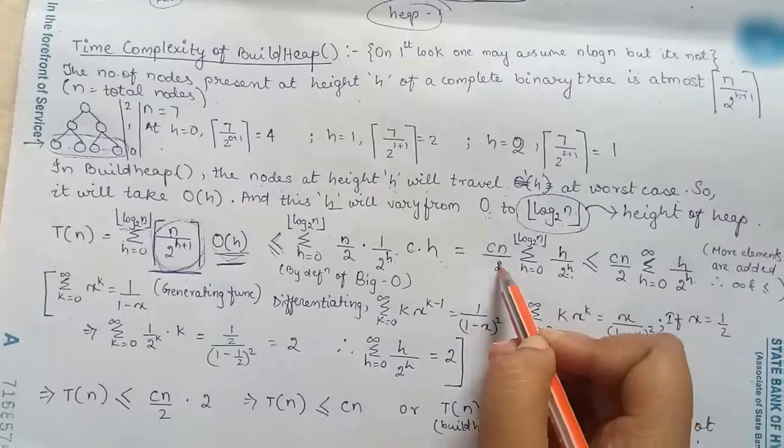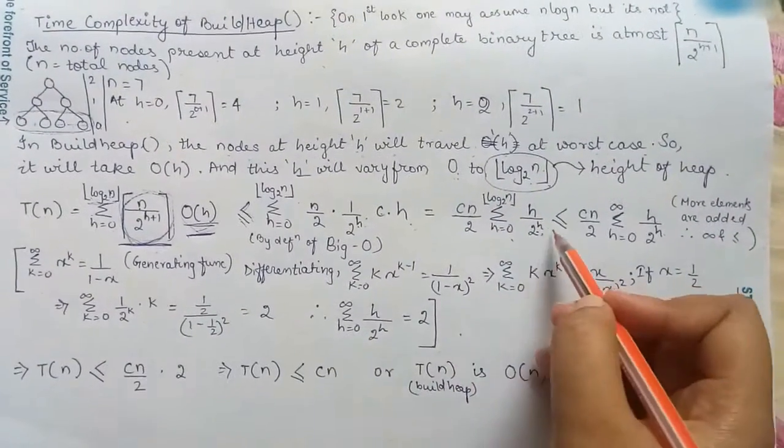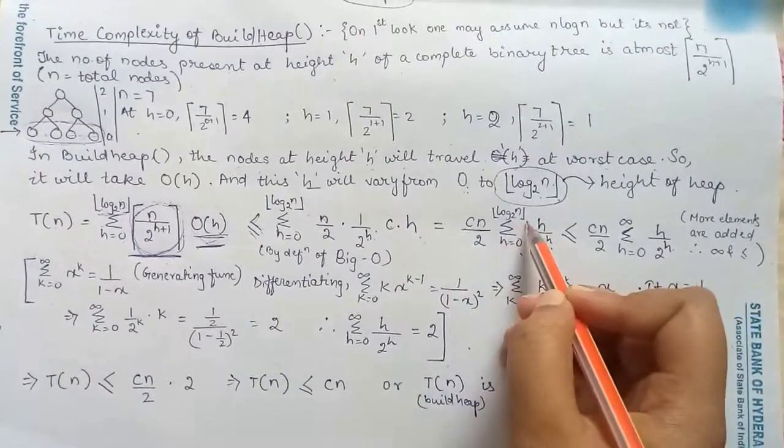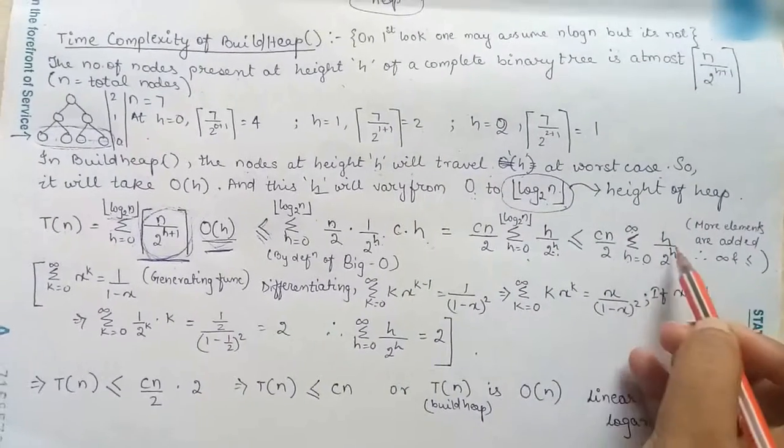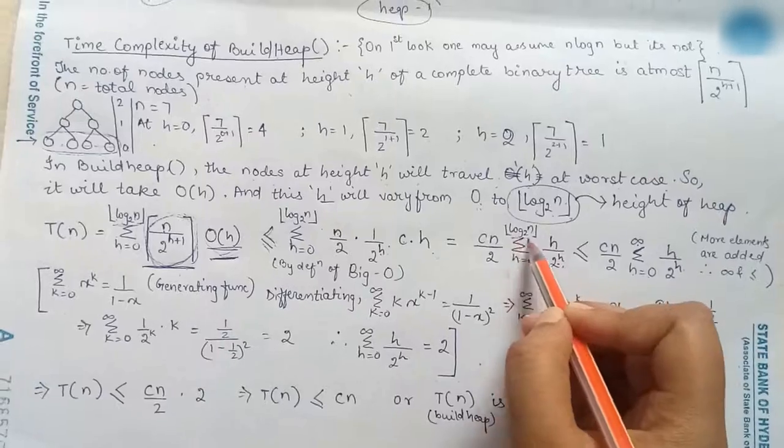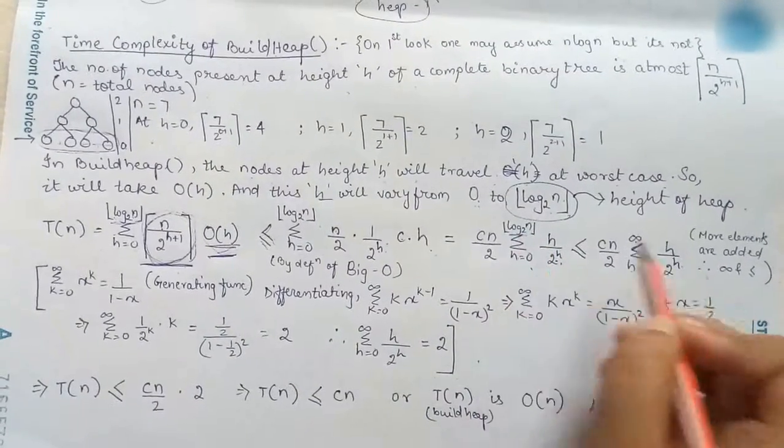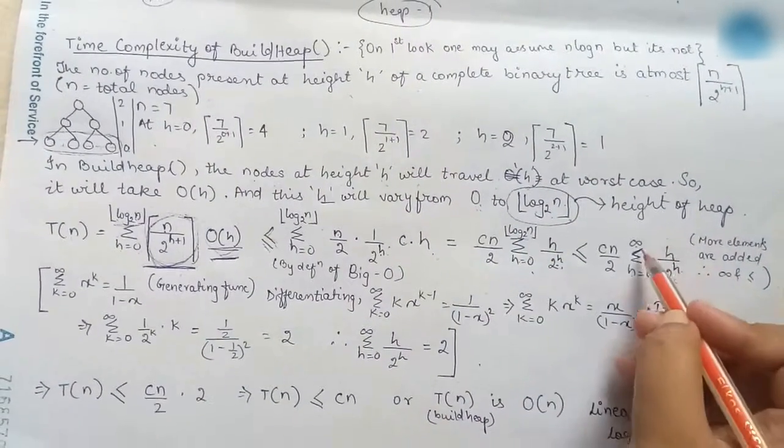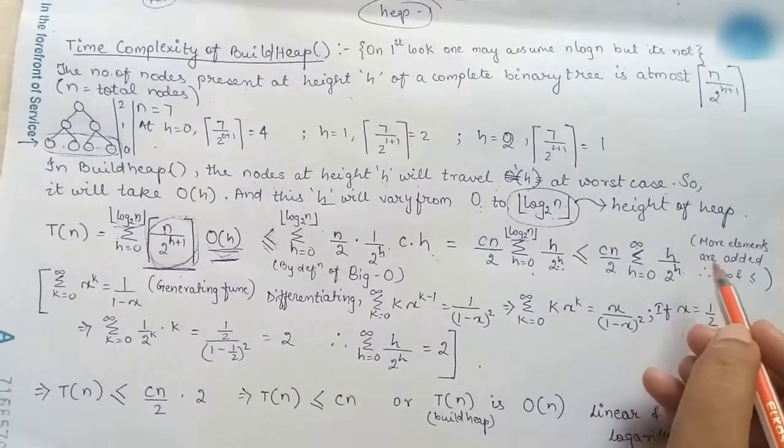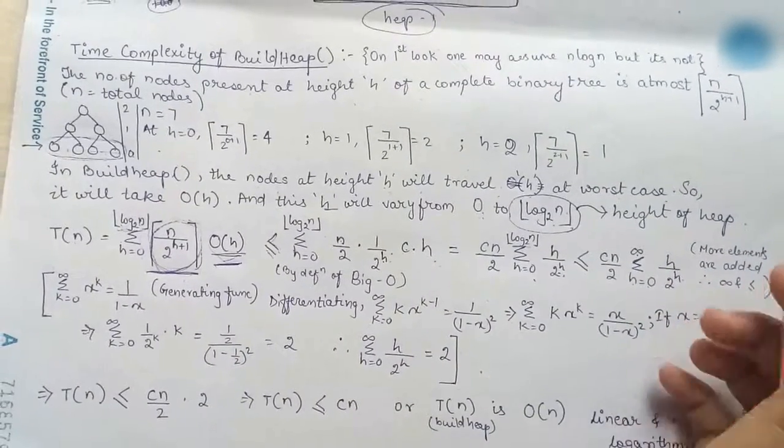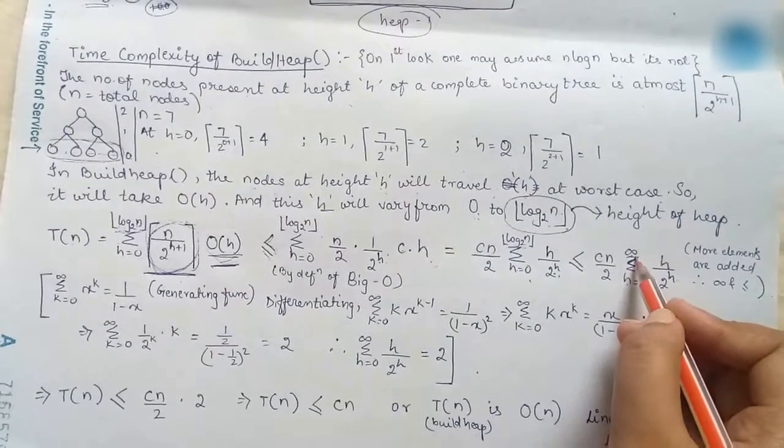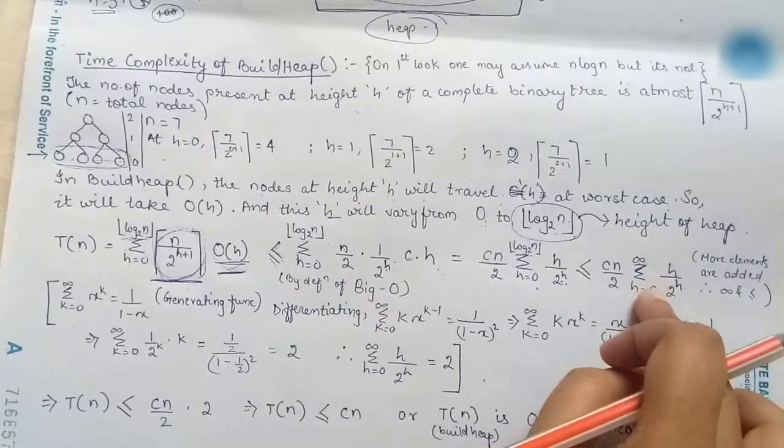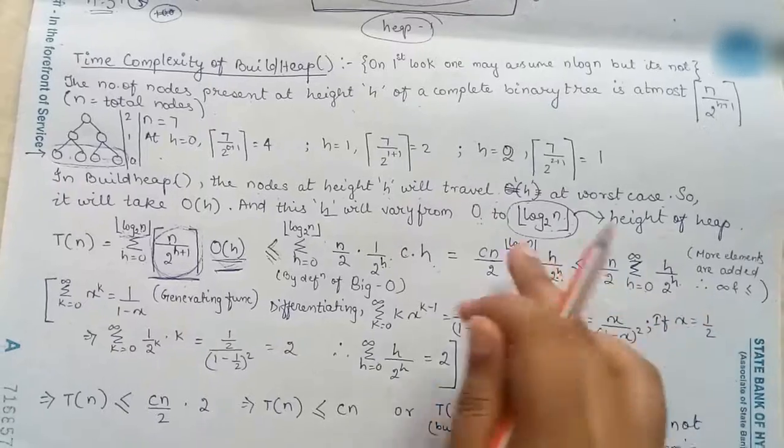And this thing is less than equal to cn by 2 summation of h equal to 0 to infinity h by 2 to the power h. So here it was log n base 2 here it was log n base 2 floor but here it is infinity that is we are adding more elements therefore it is becoming infinity the upper limit is becoming infinity therefore this term is more or greater than the previous term.